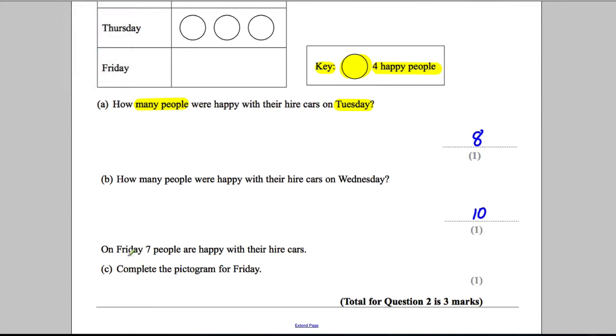And the last one, on Friday it says that seven people were happy with their hire cars. Complete the pictogram on Friday. So what are we going to need? Well, we're clearly going to need a full circle for four and we're going to need something that represents three. We know half a circle represents two, and so half of a half a circle, which is a quarter of a circle, must represent one.